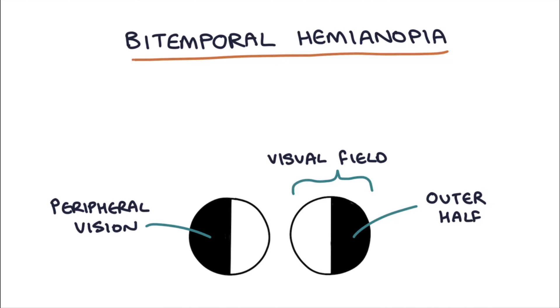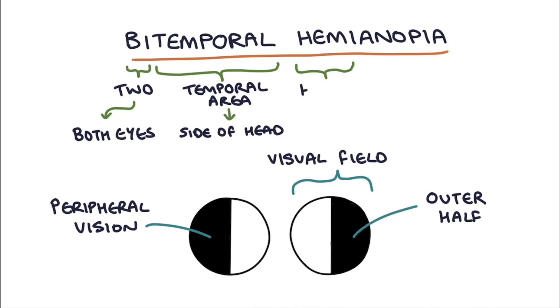Looking closer at the name, bi means two, meaning affecting both eyes. Temporal refers to the temporal area on the sides of the head rather than the middle or the front. Hemi means half, in that half the vision is affected, and anopia refers to a visual field defect.